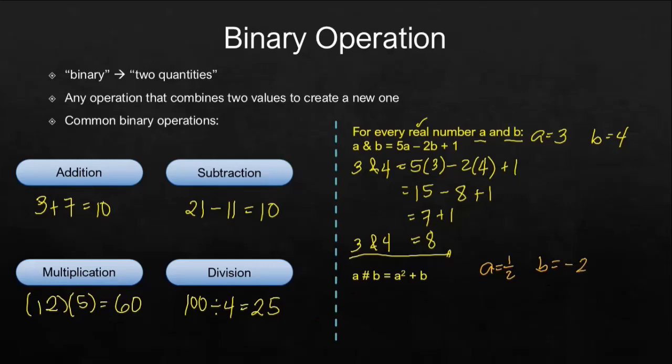So we substitute. This will be 1 half, hashtag negative 2. Taking 1 half as the value of a, or the first number, we have 1 half raised to the second power plus negative 2.